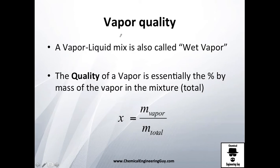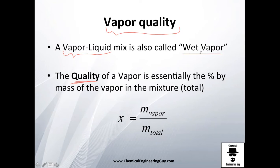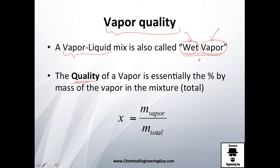Vapor quality — we've seen it before. Vapor quality is the term we use when we have a vapor-liquid mixture, and we commonly call this a wet vapor. When we say wet vapor, it contains liquid and the vapor phase. The formal definition: whenever I say vapor quality or the quality of the vapor, or the percentage of that wet vapor, we're going to use x.